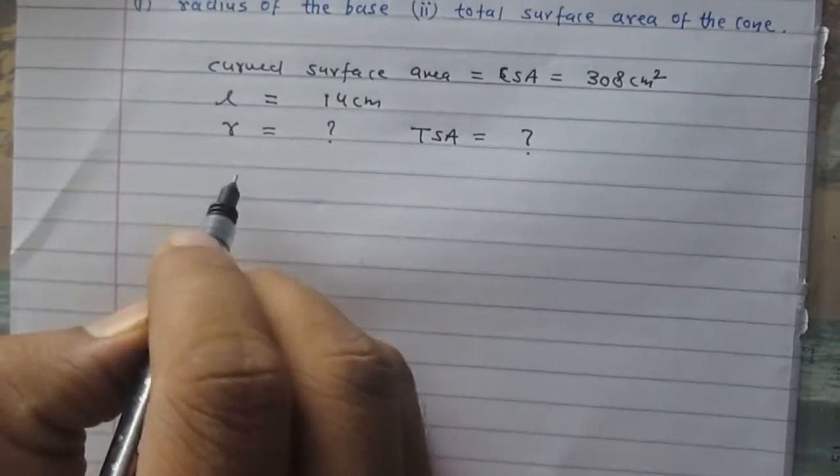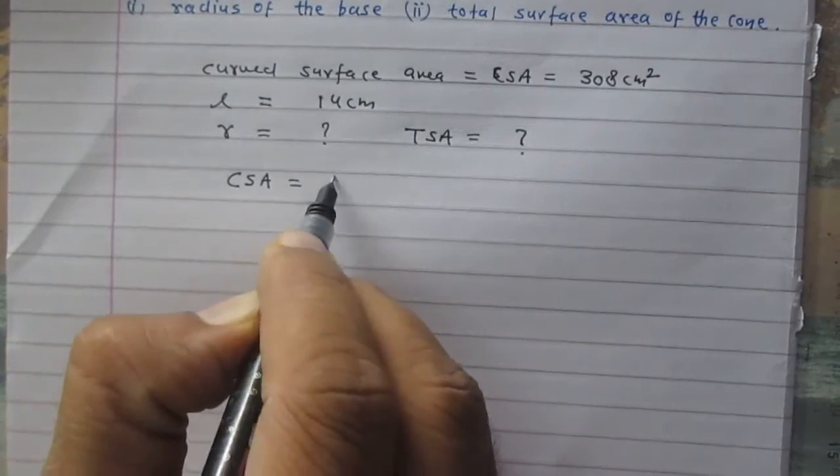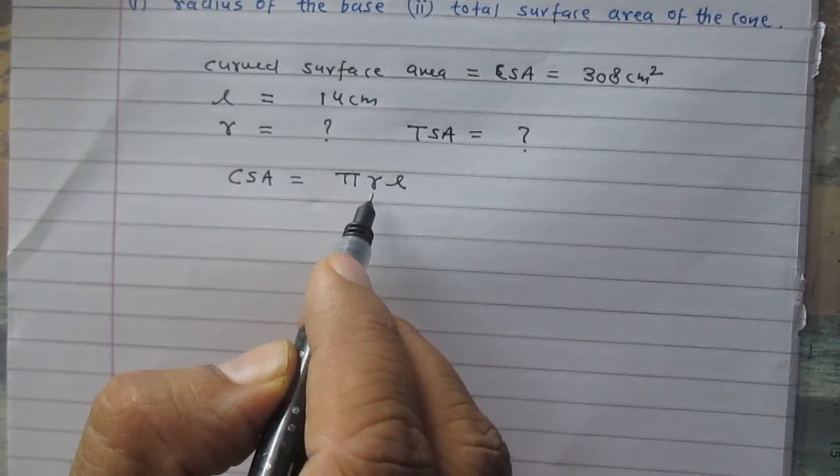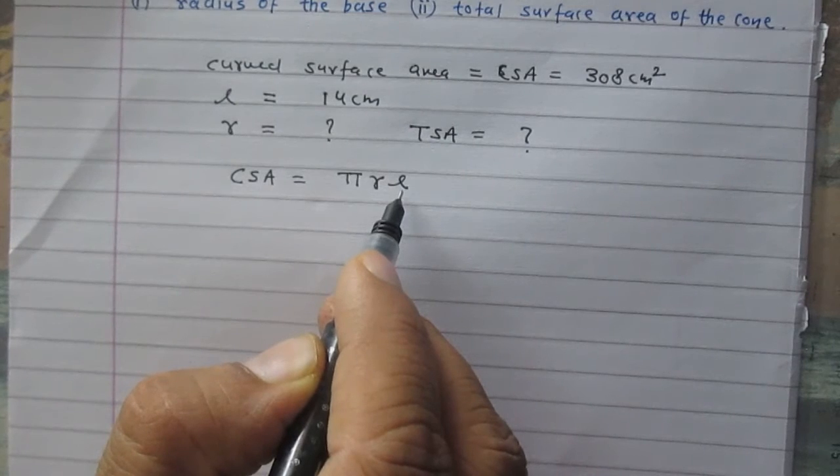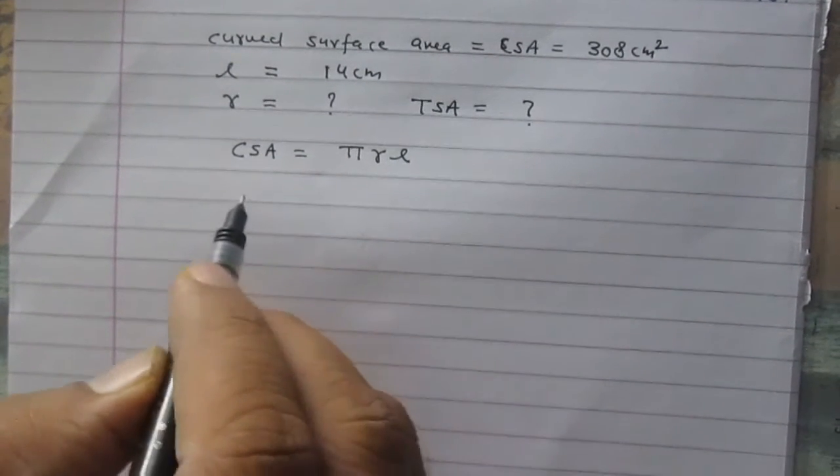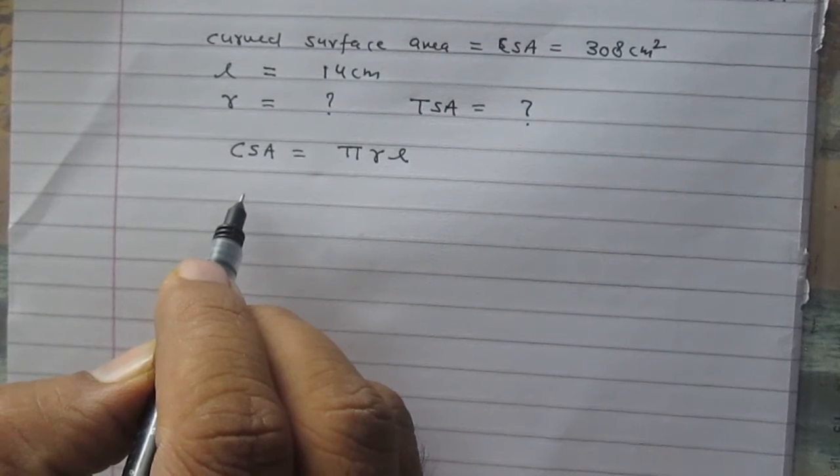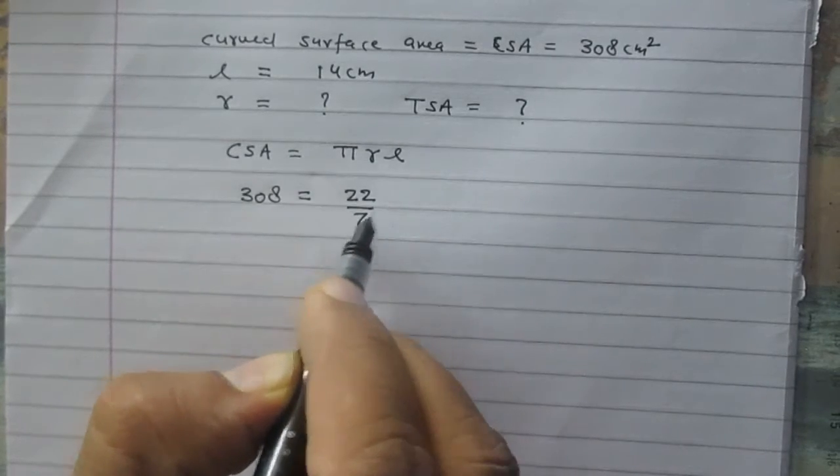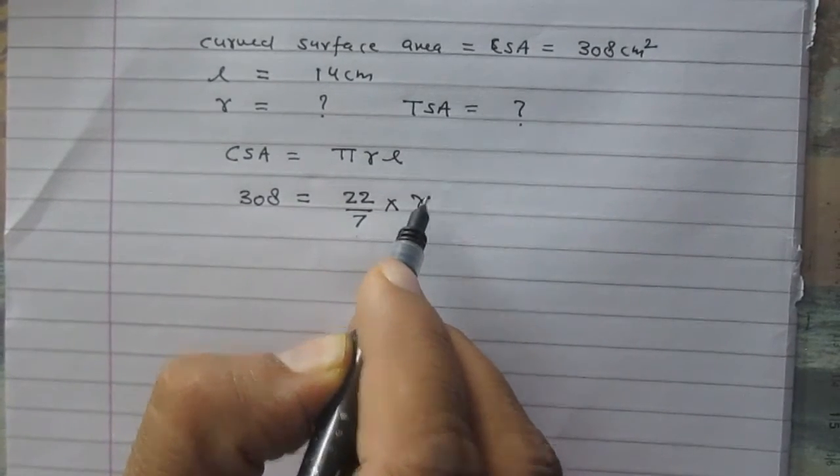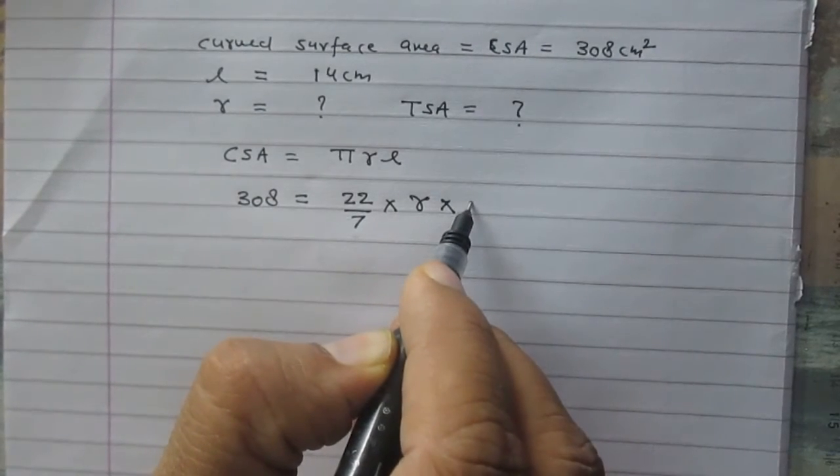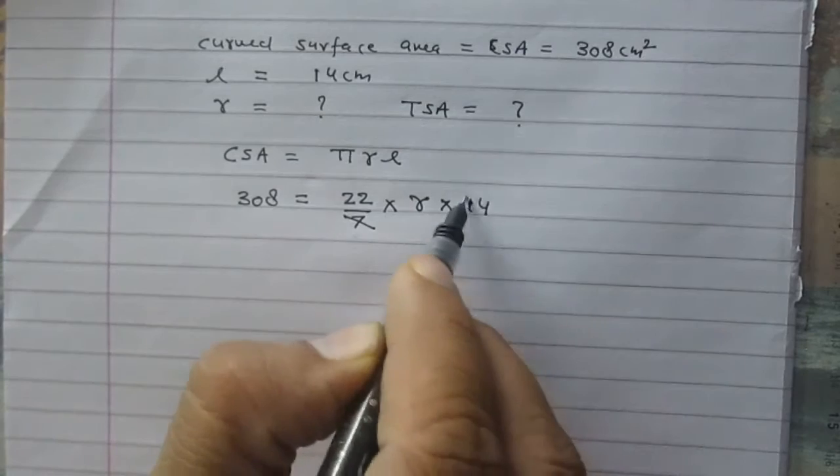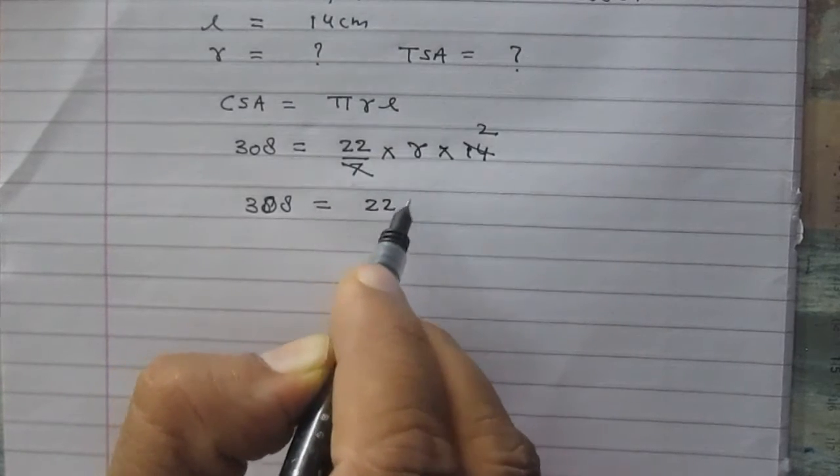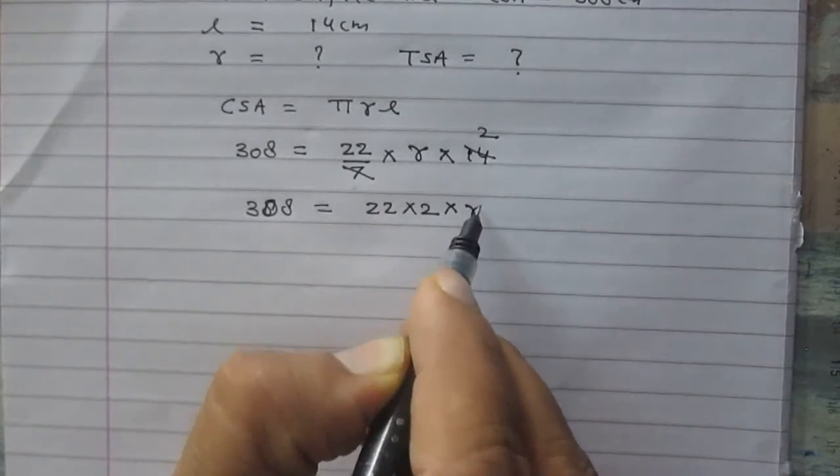According to the formula, curved surface area of the cone is πRL, where R stands for the radius of the base of this cone and L stands for slant height of this cone. After substituting the values we will get 308 = 22/7 × R × 14. After calculation we will get 308 = 22 × 2 × R.